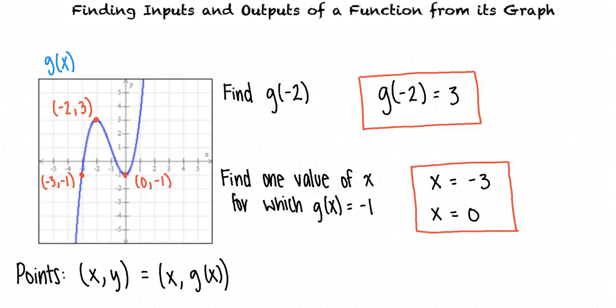I think I understand. Every point on a graph can be written as an ordered pair, x comma y, where x gives an input and y gives the corresponding output. We can use this information to find inputs and outputs of a function from a graph. That's exactly right. Great work!